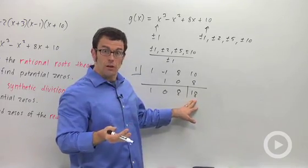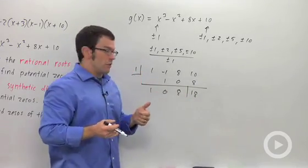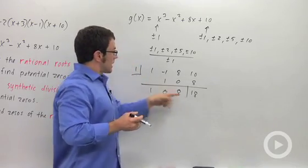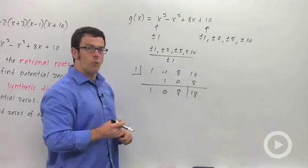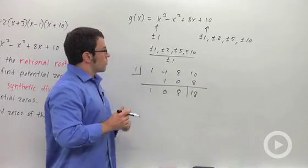And I get 18. This last number is my remainder. Now, the remainder is not 0. So 1 is not a zero. That means that g of 1 is actually 18. If you remember the remainder theorem, this is actually the value of the function g at 1. So 1 didn't work. Let's try negative 1.